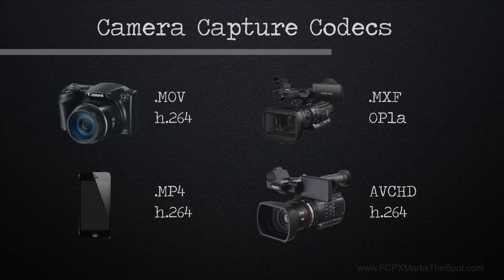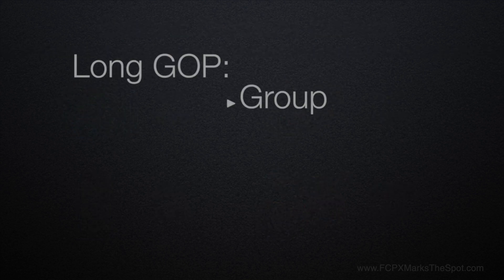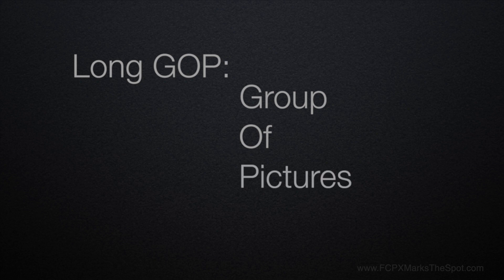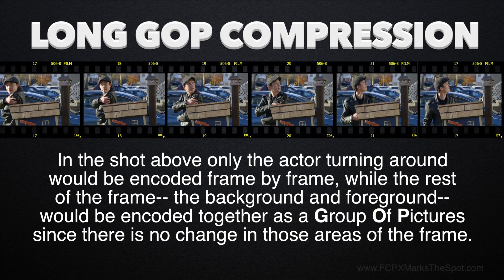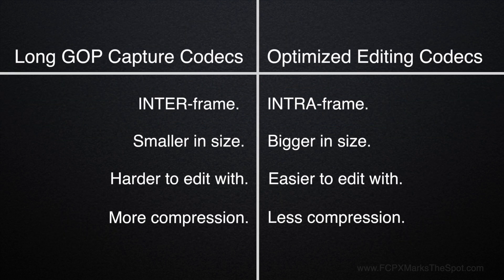Most other digital cameras outside of raw formats shoot codecs that not only compress the information to various degrees, but are also very unwieldy to edit with because of something known as long GOP compression, or group of pictures. Rather than encoding each individual frame separately, it looks over a group of pictures to see what actually changes and only encodes that. For these types of codecs, you'll mostly want to create optimized media using intra-frame codecs like Apple ProRes or Avid's DNx, which encode each individual frame by itself and are less processor intensive and more fluid to edit with.